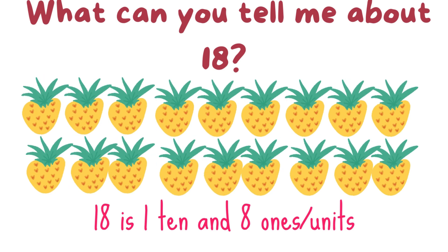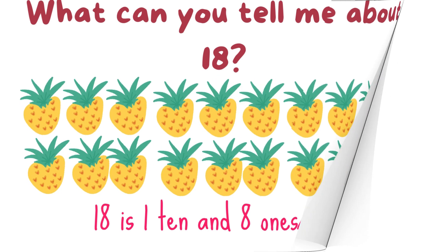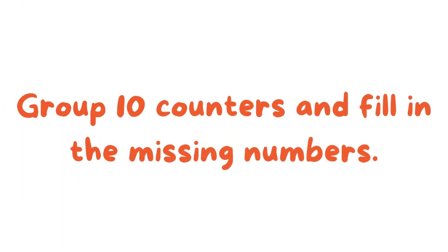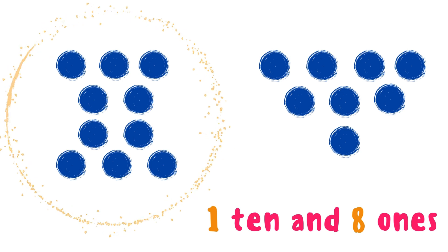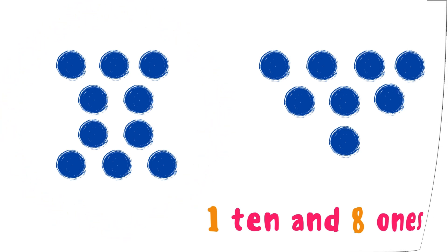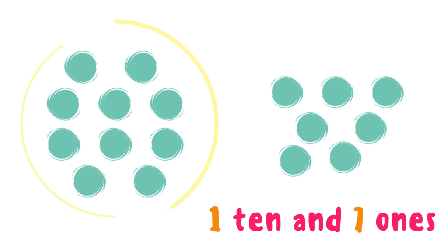18 equals 1 ten and 8 units. Group 10 counters and fill in the missing numbers: 1 ten and 8 units, 1 ten and 7 units.